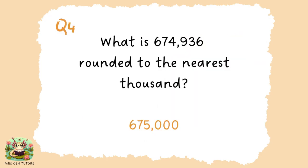What is 674,936 rounded to the nearest thousand? Well, if we're rounding to the nearest thousand, there will only be zeros in the ones, tens and hundreds positions. We would be looking at the digit in the hundreds position to tell us whether the four in the thousands position will stay at four or go up to five. Five and above, we round up. The nine in the hundreds position tells us we're rounding up, so the four rounds up to five. Our answer is 675,000.